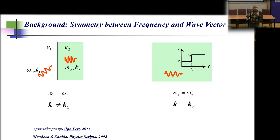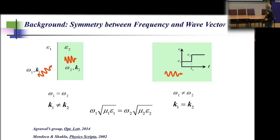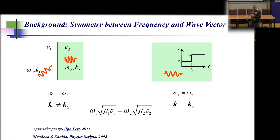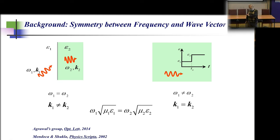This is a quite interesting difference between the two scenarios. For the rest of my talk, I'll refer to this condition: when you have a temporal interface, ω₁√(μ₁ε₁) must equal ω₂√(μ₂ε₂).